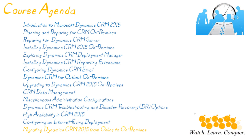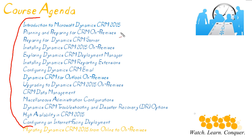Here is a list of the items we're going to be discussing as we go through this course. As you can see, we have 14 nuggets. We're going to begin in this nugget with just a flyby of what Microsoft Dynamics CRM is all about. In fact, I'm going to start with Microsoft Dynamics — not even CRM — so you understand the different products available to you. Then we're going to go through planning and preparing for CRM on-premises.